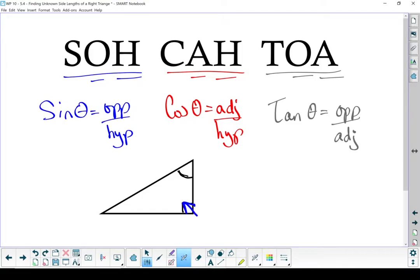Remember, the right angle points at the hypotenuse. That's that side right there. The side on the far side of the triangle from my angle, that must be my opposite. And last but not least, the leg beside your angle is the adjacent side.